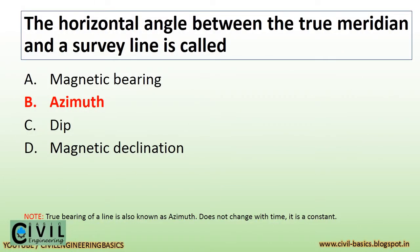The horizontal angle between the true meridian and a survey line is called azimuth. True bearing of a line is also known as azimuth. It does not change with time — it is a constant.